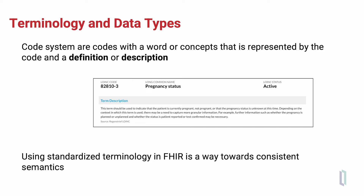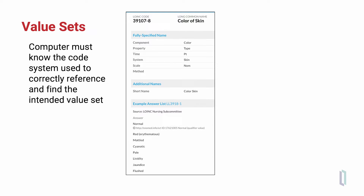In this case, the example is a LOINC code for pregnancy status, which includes the definition or description of this. An example of a value set is a collection of codes that may be required in a specific data element. This example is skin color, and there are a set of LOINC codes for skin color. These are assembled into a value set, ranging from normal to pale, flushed, red — all different descriptions of skin color — so that there is a limited number of descriptions that could be used in recording data. Otherwise, people might use slightly different words for what is intended to be the same concept. So we create value sets to enable consistency in representing a particular data element.